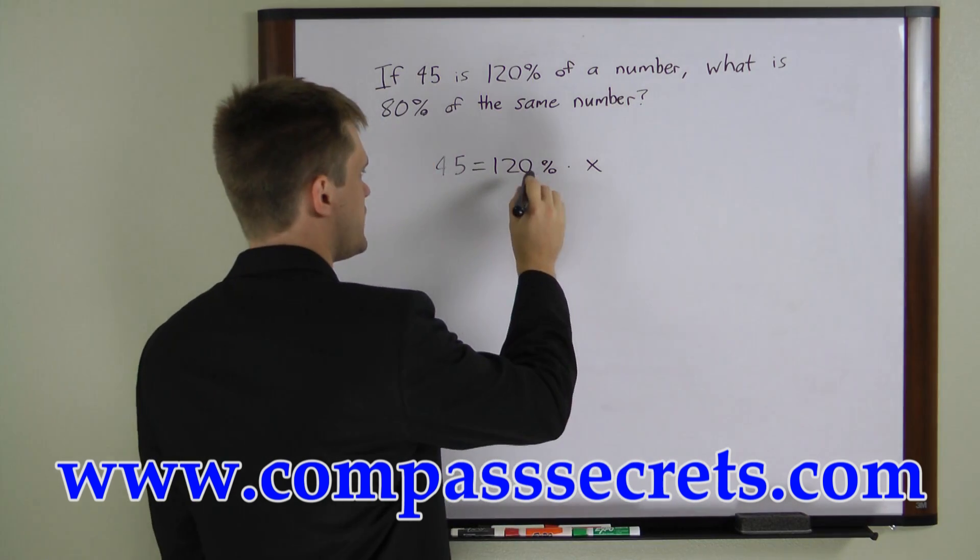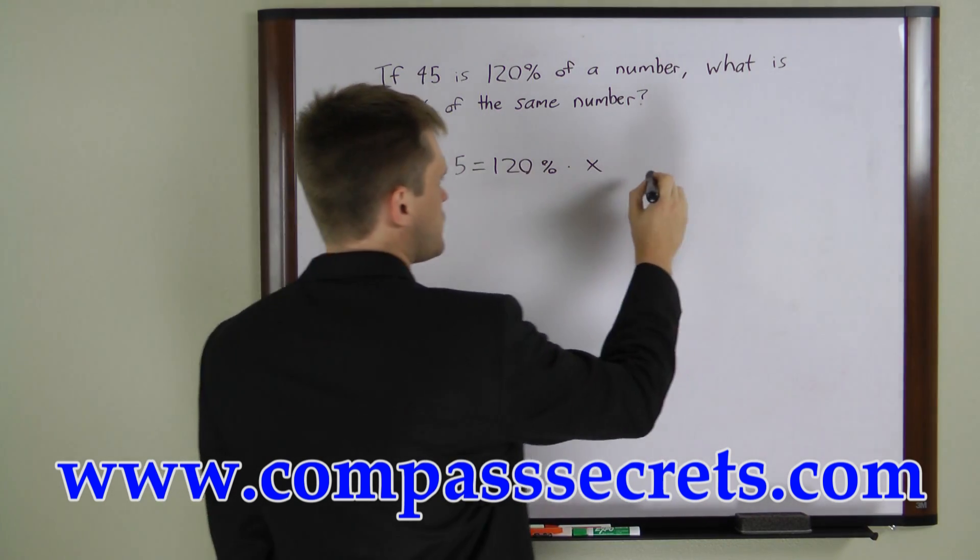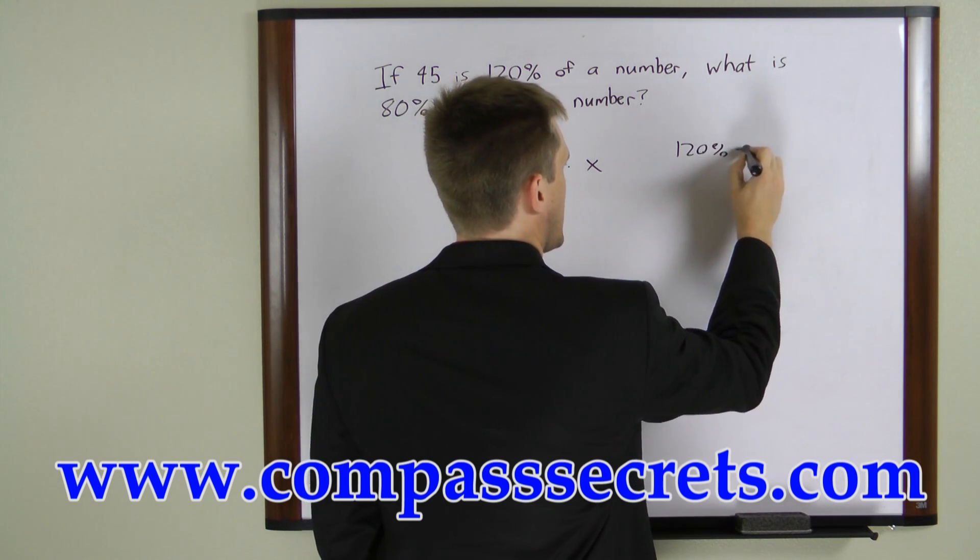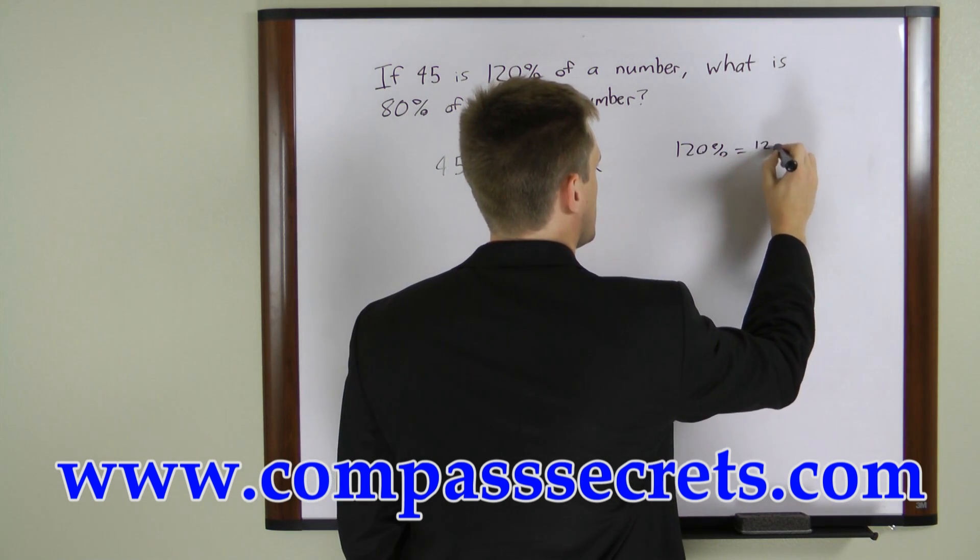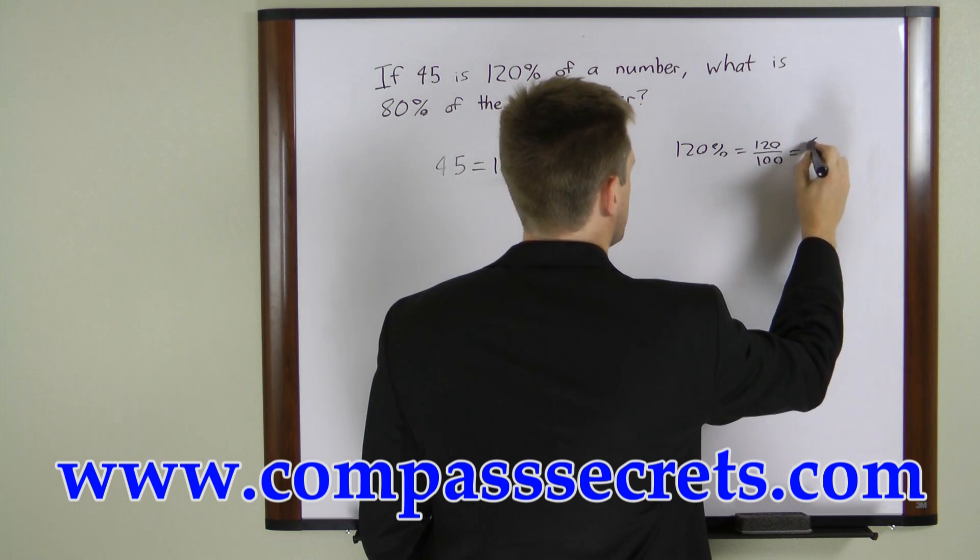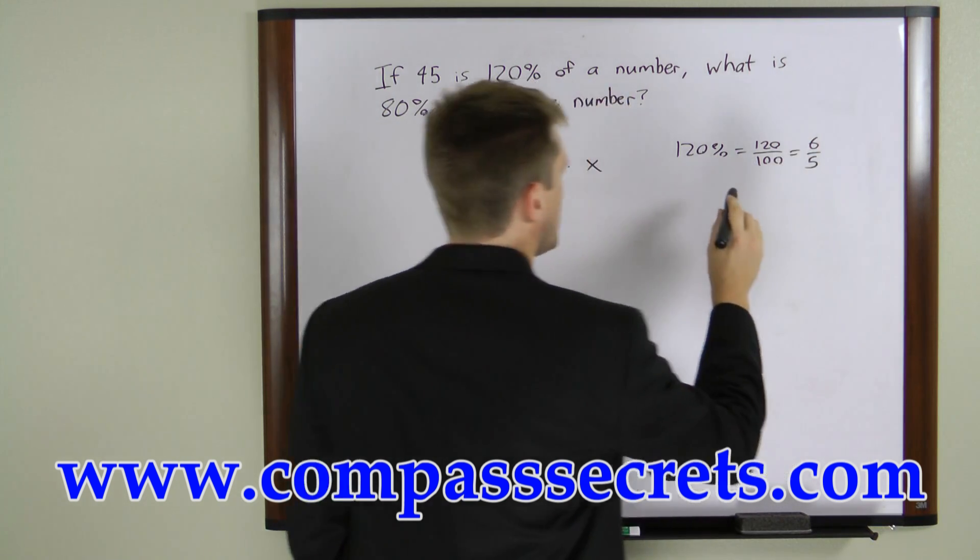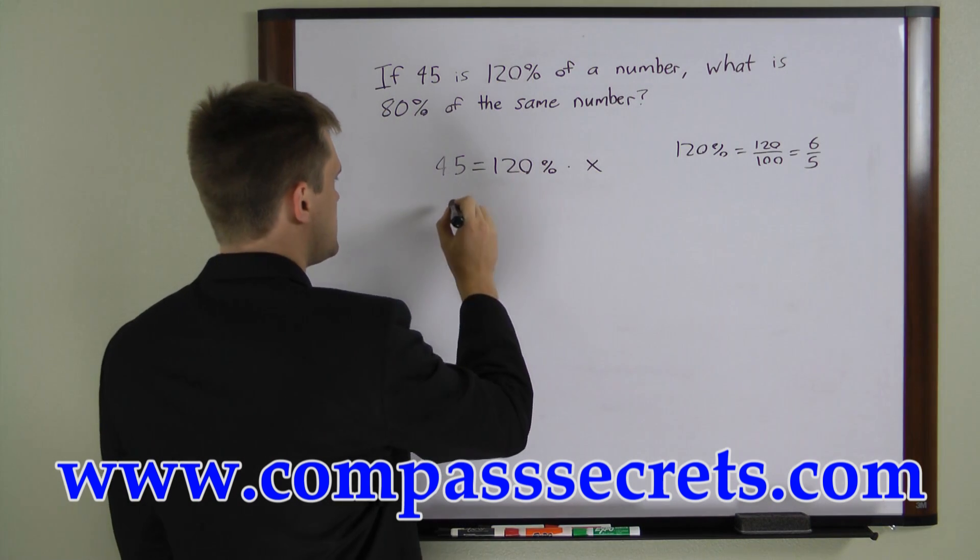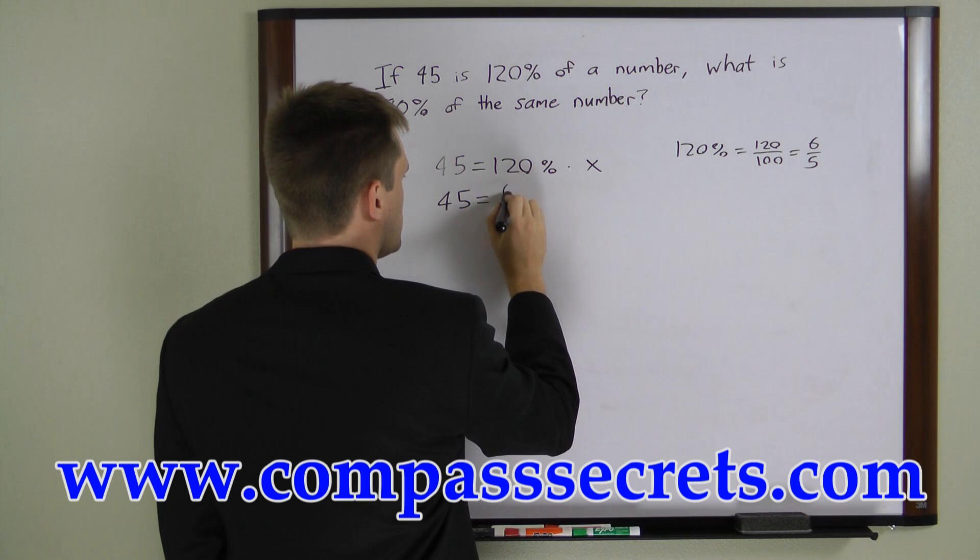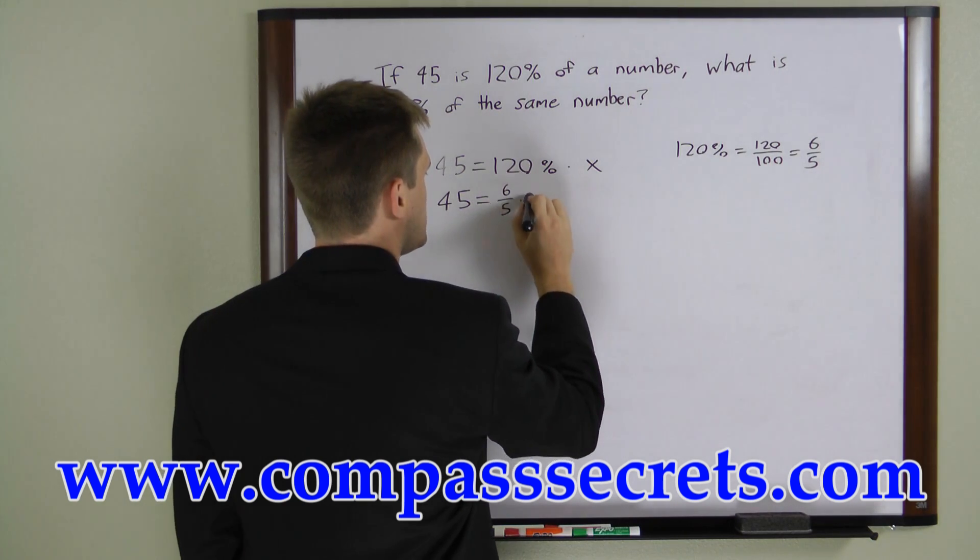Now to solve this we want to convert the 120% to a fraction. So let's do that. 120% is 120 over 100, which is the same as 6 over 5. Now let's substitute that into this equation and what we get is 45 equals 6 over 5 times x.